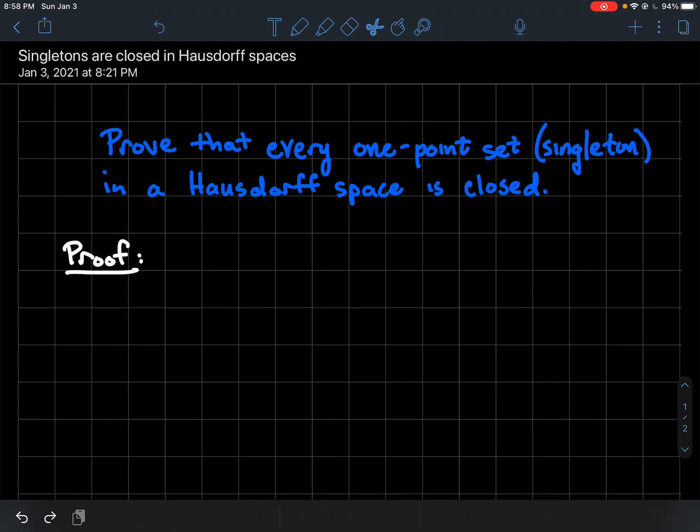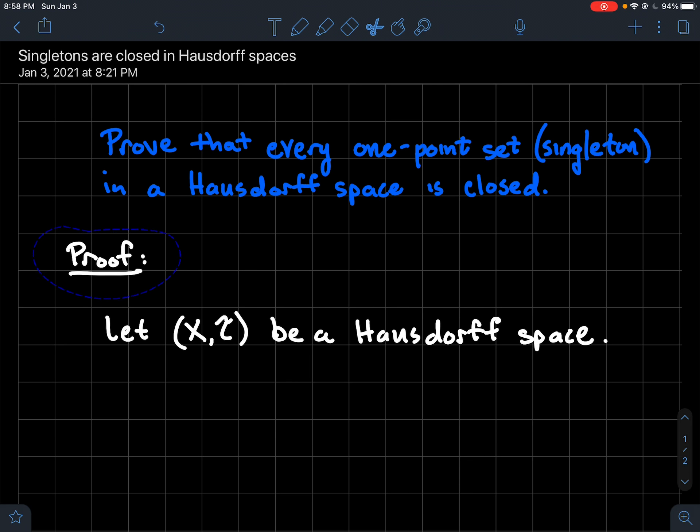So what does the proof of this look like? Let's let (X,T) be a Hausdorff space. So what's this notation mean? X is just some set here and T is a topology that's on that set X. That's all I mean by this kind of pair notation here.